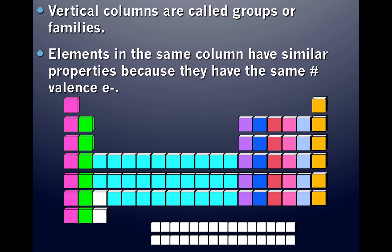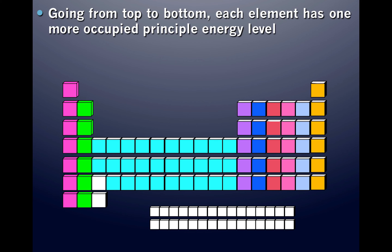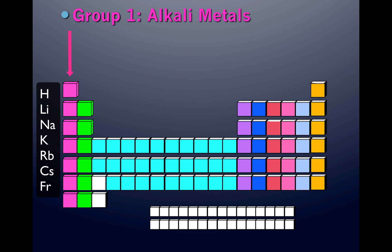As you go down a vertical column, the number of valence electrons does not change. Going from top to bottom, however, each element has one more occupied principal energy level. In other words, the valence electrons go into higher energy levels: n=1, the valence electron is in the first energy level; n=2, the valence electrons are in the second energy level; n=3, the third energy level, and so on. As you go down a family, there is one more occupied principal energy level.